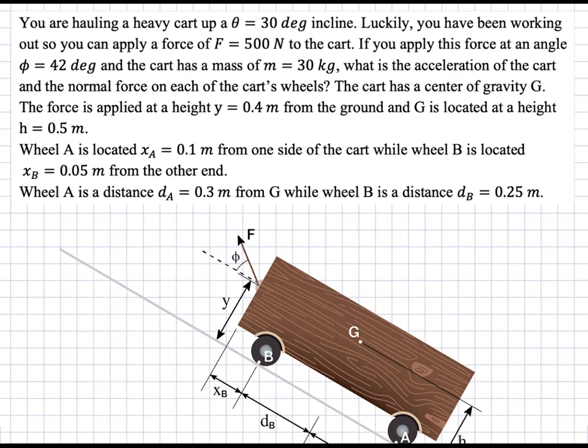In this question, you're hauling a heavy cart up a slope of 30 degrees. You're pulling it with a force of 500 newtons at an angle of 42 degrees with respect to the horizontal. The mass of the cart is 30 kilograms, and all of the dimensions of the wheels, the center of gravity, and the load application zone are given. You're asked to find the normal forces on the wheels — wheel A and wheel B — along with the acceleration of the cart up the slope.